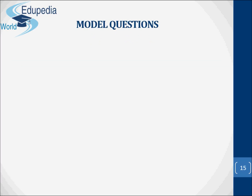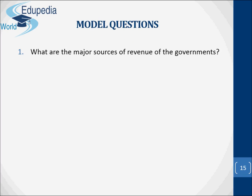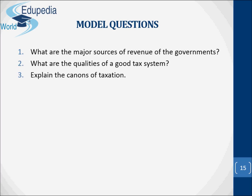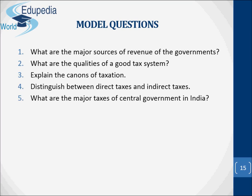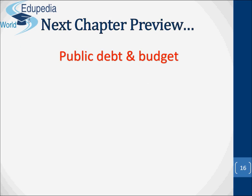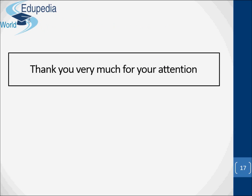Let's present some model questions. One: what are the major sources of revenue of the governments? Two: what are the qualities of a good tax system? Three: explain the canons of taxation. Four: distinguish between direct and indirect taxes. Five: what are the major taxes of the central government in India? This is the end of this chapter. The next chapter will be related to public debt and budget. Thank you very much for your attention.